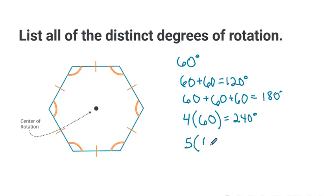Next is five 60s. If I multiply this I get 300. And the last one, this is a great way to double check anyway, six times 60. Ooh that's that perfect 360. So these are your distinct degrees of rotation. This is what you are looking for when it is asking what are the distinct degrees of rotation.